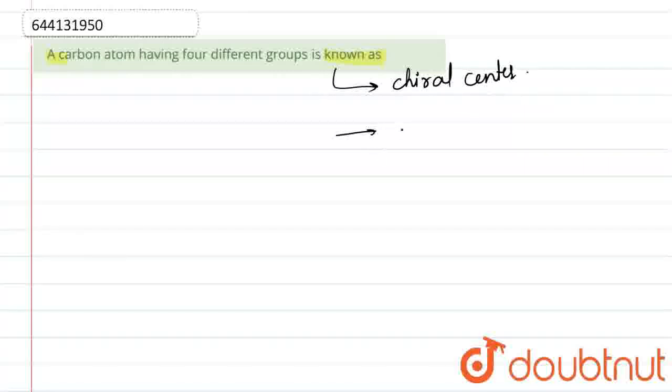So we can say that these are optically active and not superimposable on their mirror image. In other words, they are non-superimposable. We can say that a carbon atom having four different groups is known as a chiral center or chiral carbon.